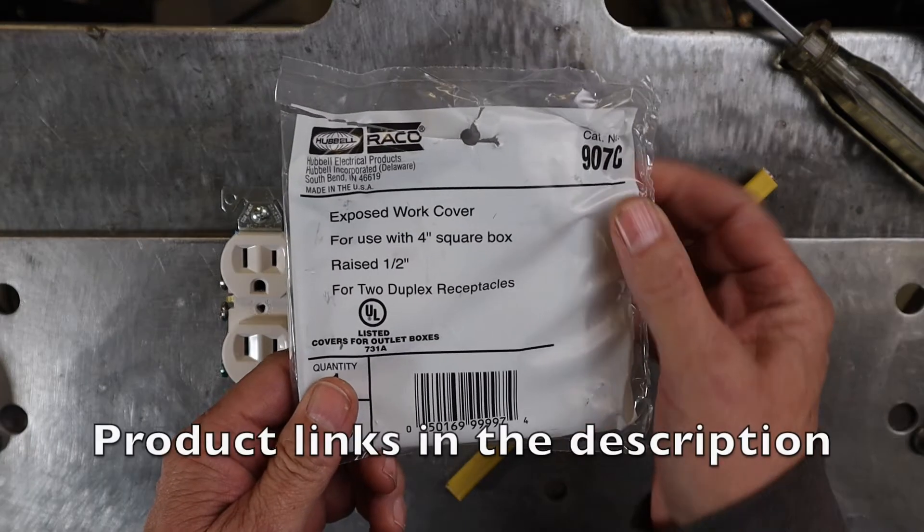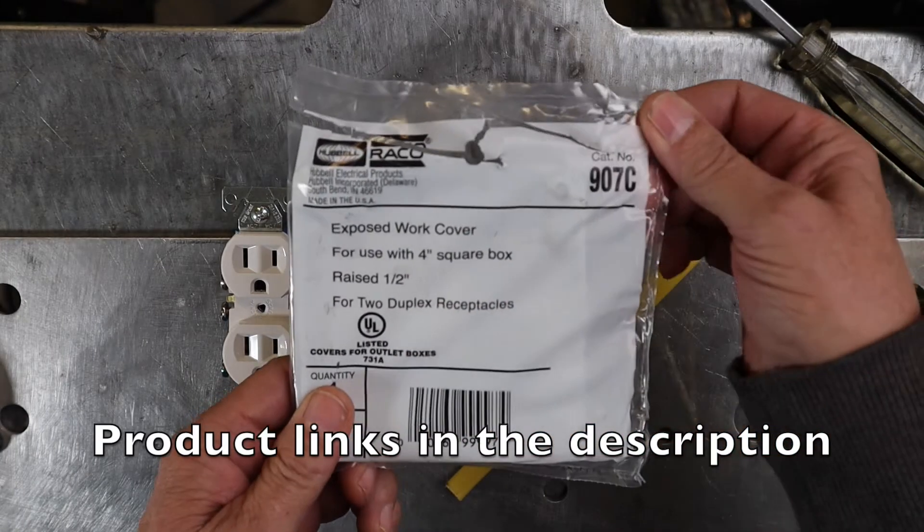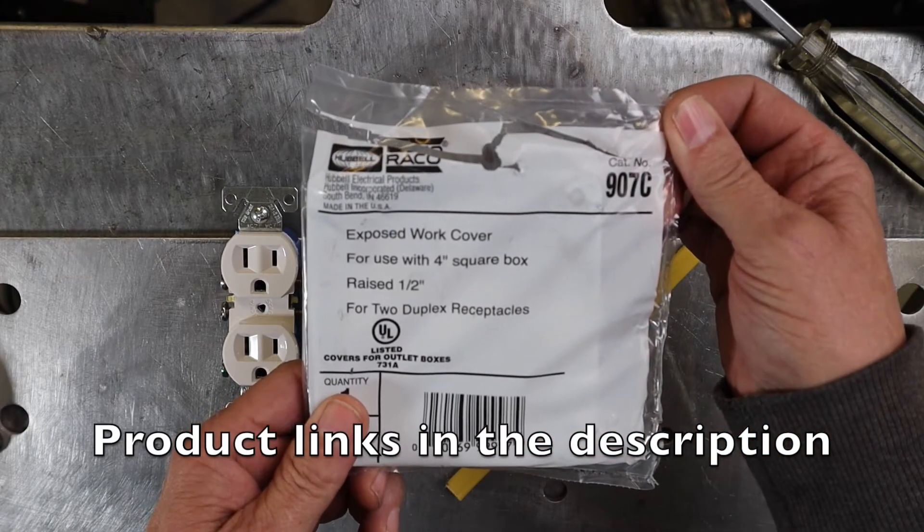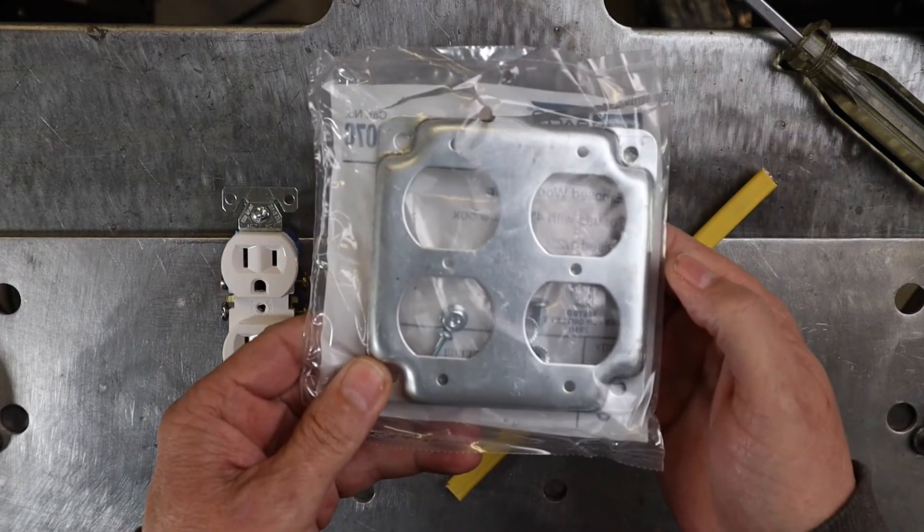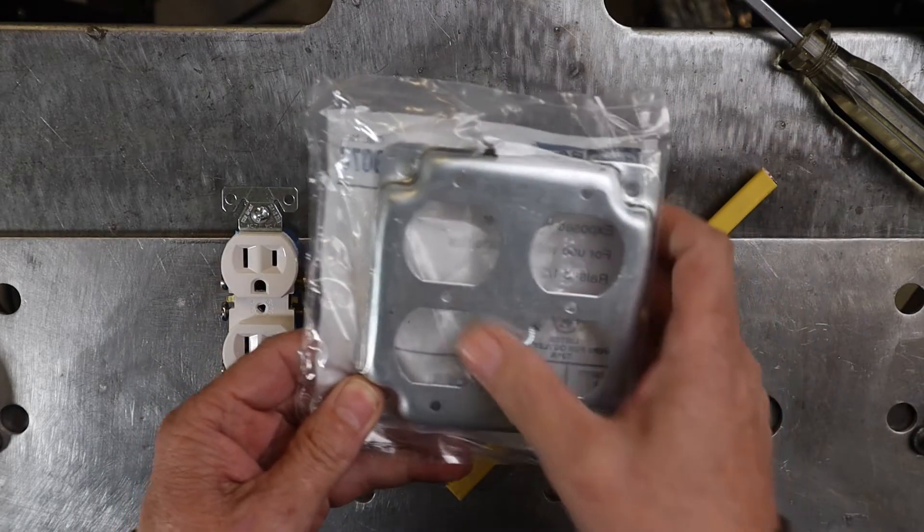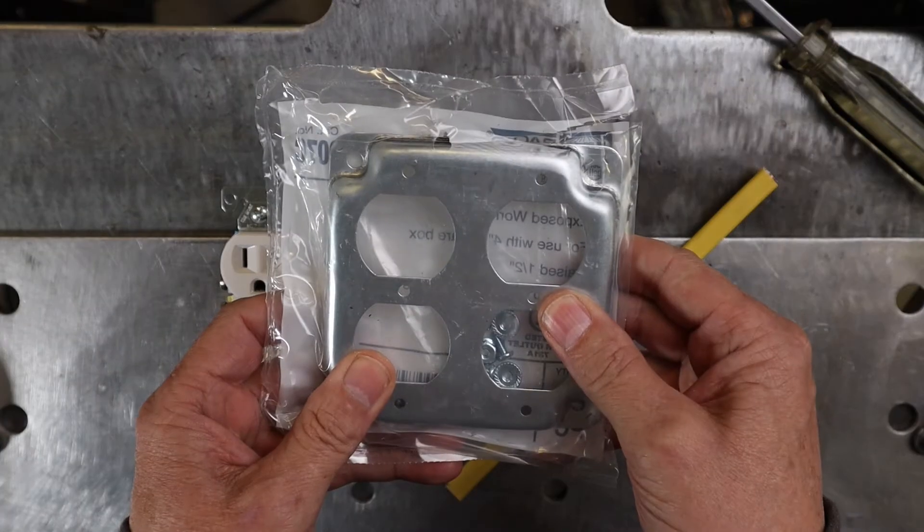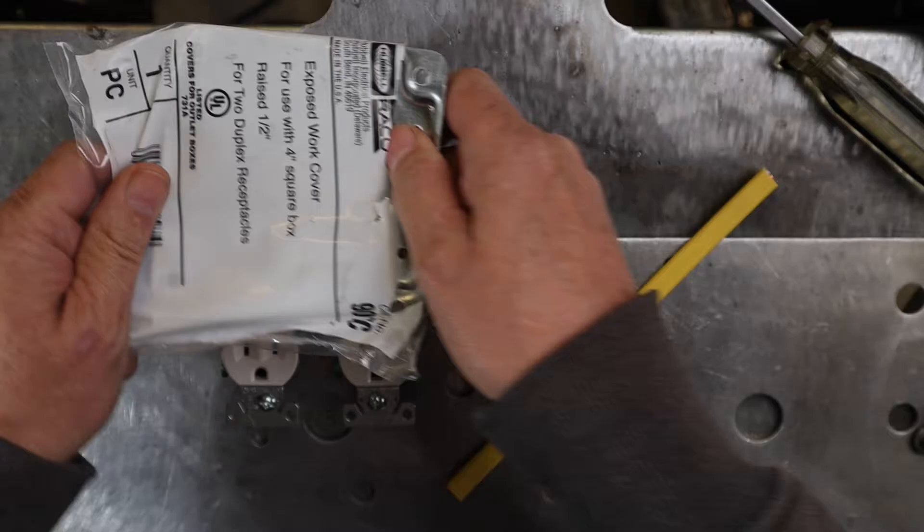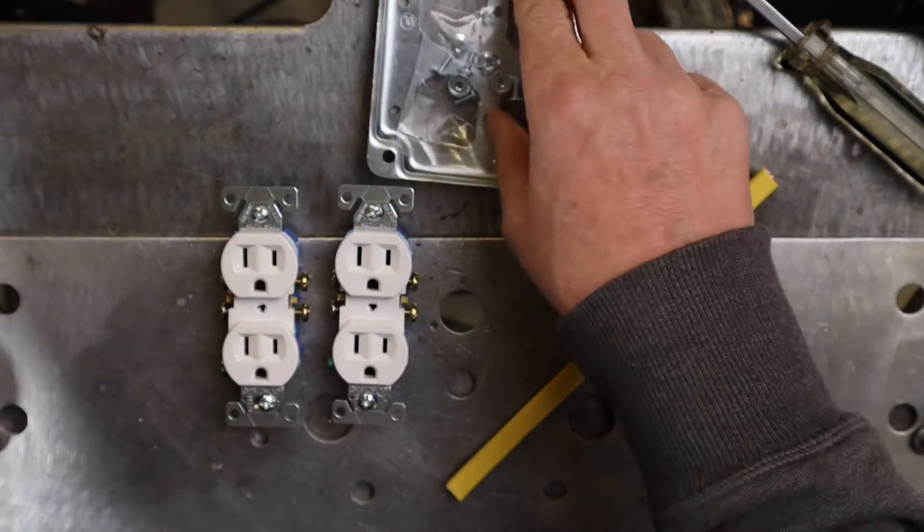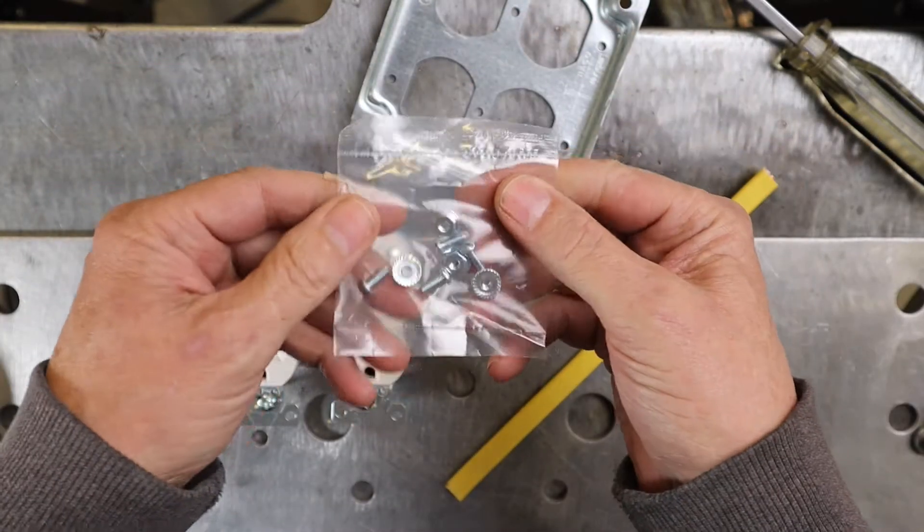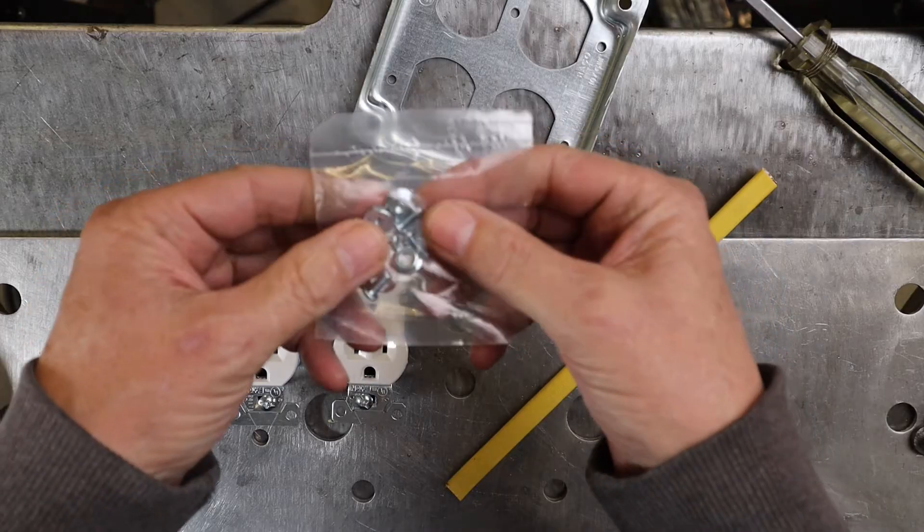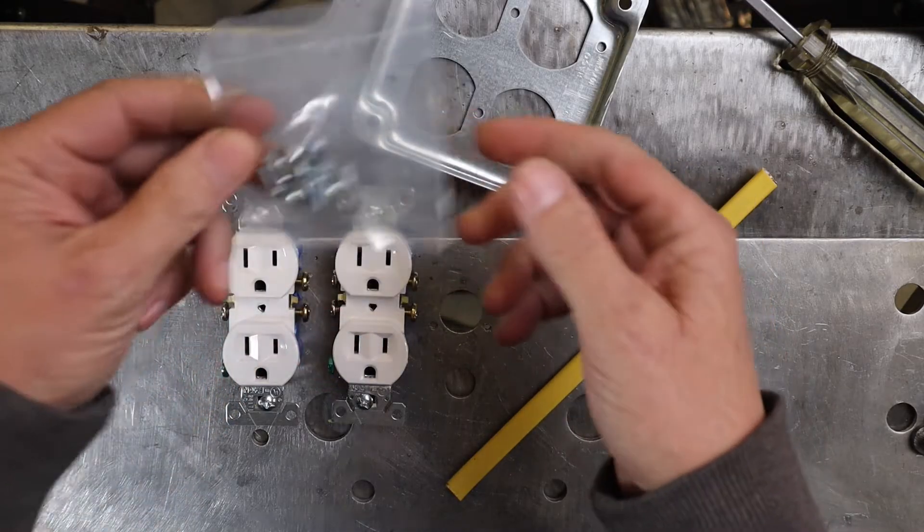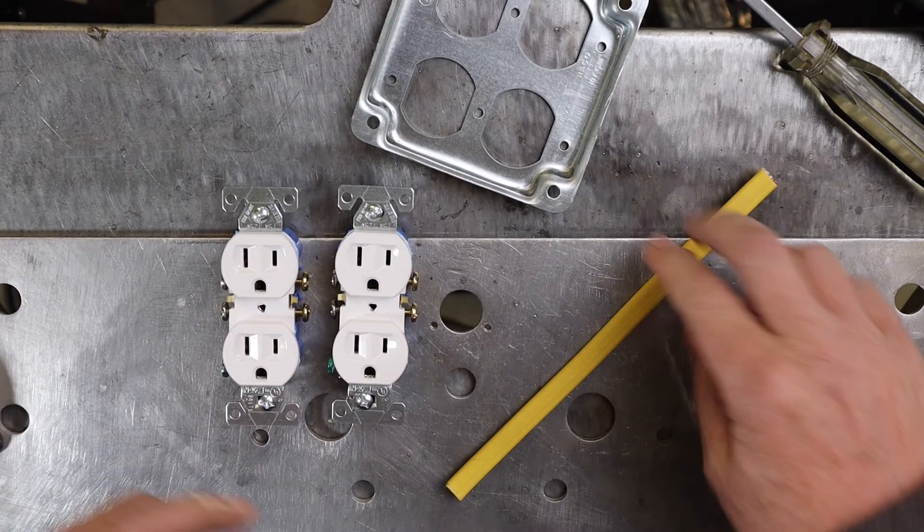This is the cover that I'll be using if anybody wants to get the part number or whatever off of that. Double duplex metal four by four inch box cover comes with the cover of course and then four small bolts and nuts that'll be necessary as we continue on.